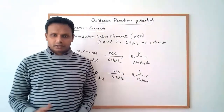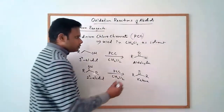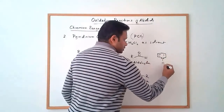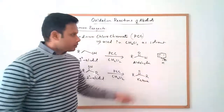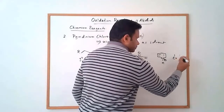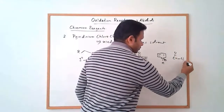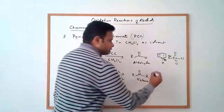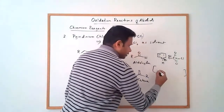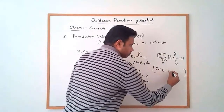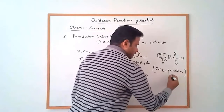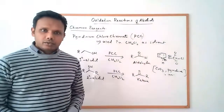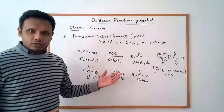Pyridinium chlorochromate is a chromium-based oxidant. The structure of this molecule has a pyridinium ion — a protonated pyridine — along with a chromium ion. It is synthesized by reacting chromium trioxide with pyridine and HCl (hydrochloric acid), and that combination gives you pyridinium chlorochromate, which is used for these oxidations. It is a milder oxidant because it can selectively oxidize primary alcohols to the aldehyde.